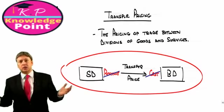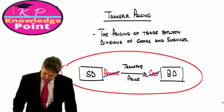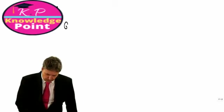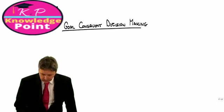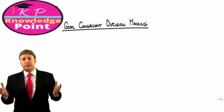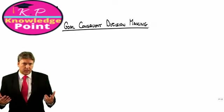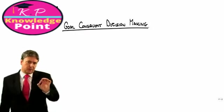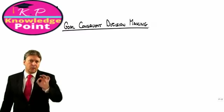On that basis, why is it that transfer pricing is at all important? The first reason is simply this. When we look at divisional performance, we are particularly concerned that divisions make decisions that are consistent with overall company profit maximization. So if we were looking at goal-congruent decision-making, we have to make sure that the transfer price encourages individual divisions to make the appropriate decision.